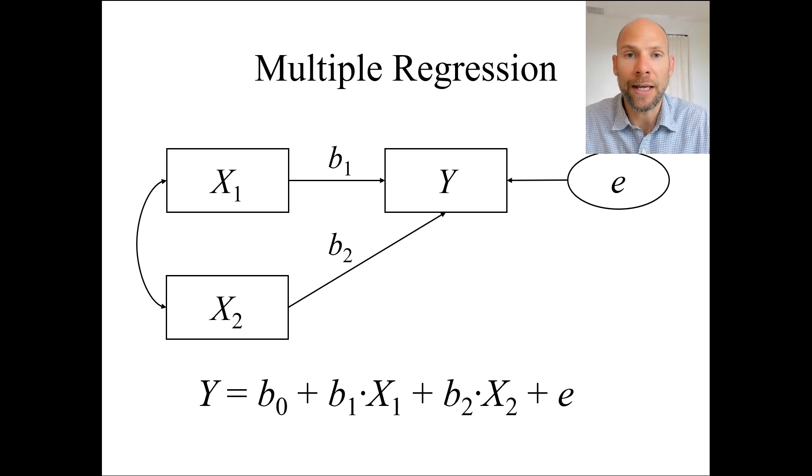Therefore, we call b1 a partial regression coefficient or a partial regression slope coefficient because it is about the linear association between x1 and y in the presence of x2. So the relationship that x1 and x2 may have is indicated here with this double headed arrow, the covariance or correlation between x1 and x2 is taken into account when b1 and b2 are estimated. b2 then is the partial regression coefficient for x2 that characterizes the linear influence or the linear association between x2 and y in the presence of x1.